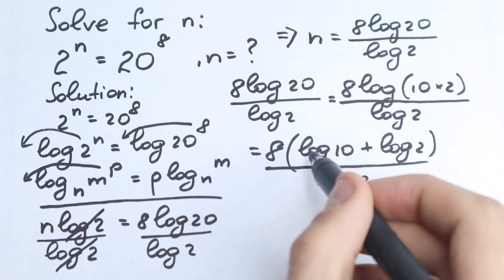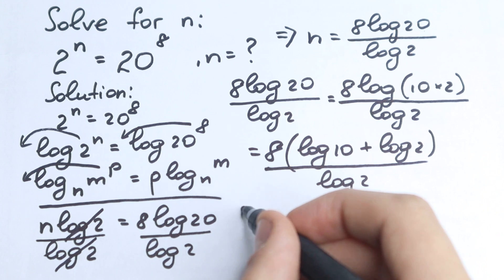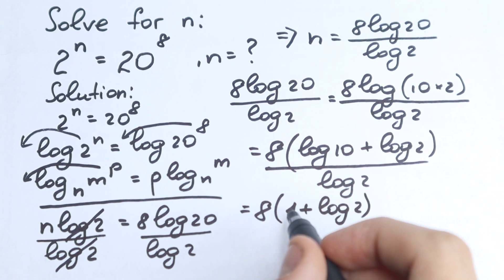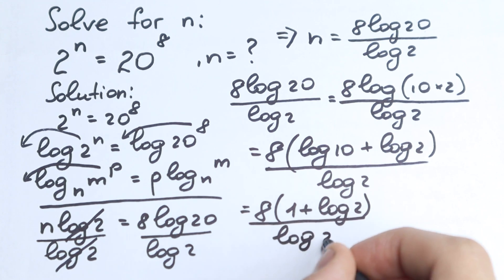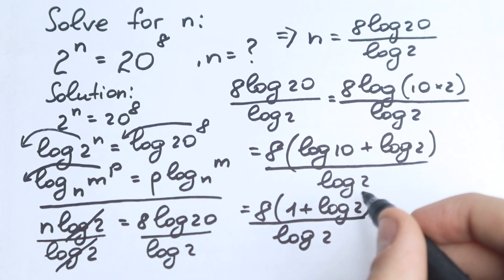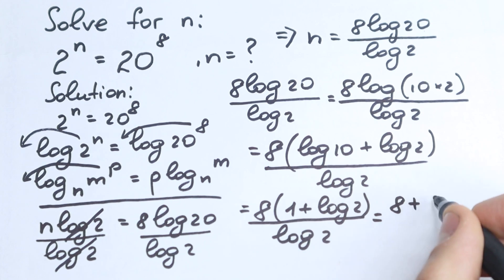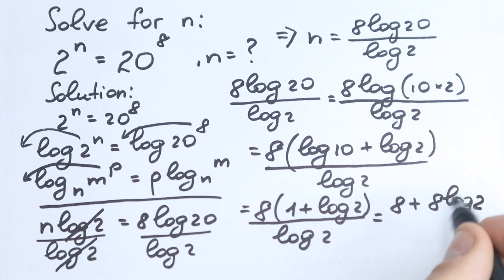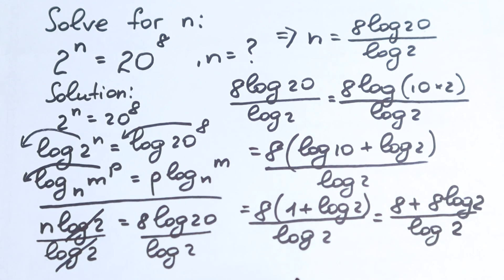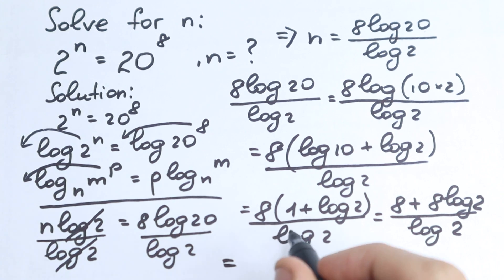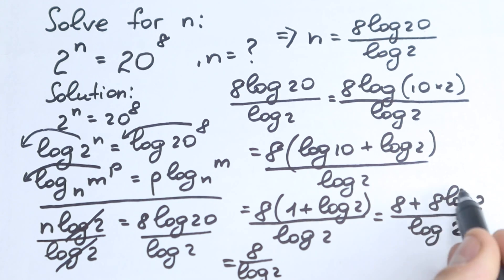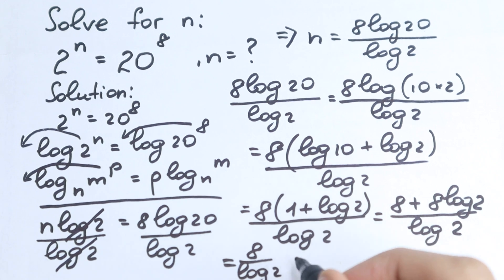Log 10 equals 1 because we're working in base 10. So we have 8 times (1 plus log 2) over log 2. Expanding the parentheses gives us 8 plus 8 log 2, all over log 2.